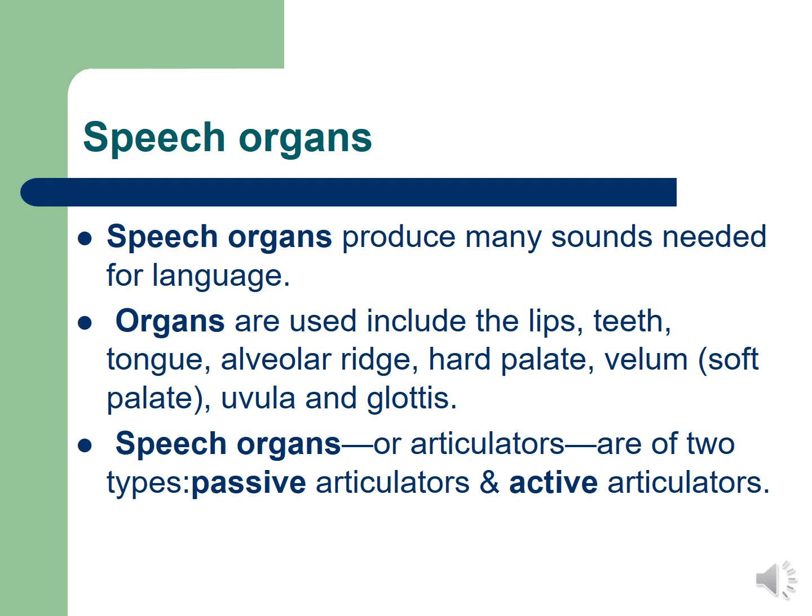Speech organs are also called articulators — the two names have the same meaning. They are of two types: passive articulators and active articulators. Let's understand what passive and active articulators mean.